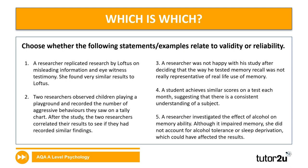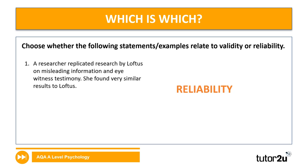Let's apply our knowledge of reliability and validity to five different statements or examples on the screen — these also appear in the workbook. Read through each and note whether you think it's referring to validity or reliability. I suggest you pause the video here. The first example: a researcher replicated research by Loftus on misleading information and eyewitness testimony, and found very similar results. That's obviously about reliability because it shows consistency of results from one measure to another.